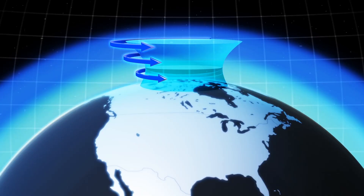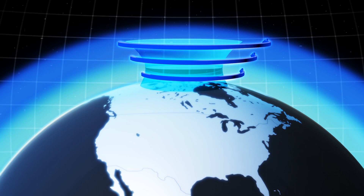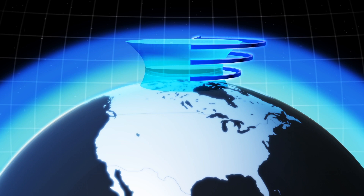The Polar Vortex is a band of low-pressure Arctic air normally centered around the North Pole. It is located in the middle and upper tropospheres and extends into the stratosphere.